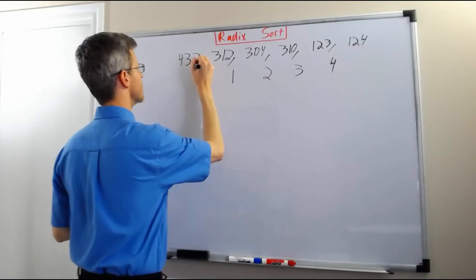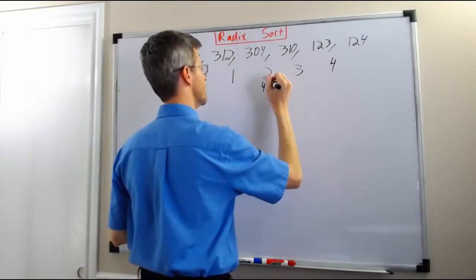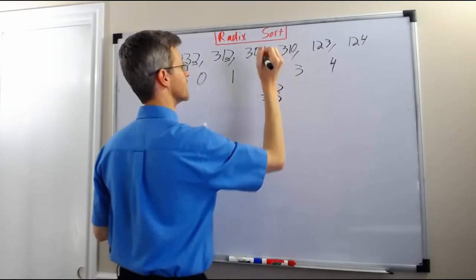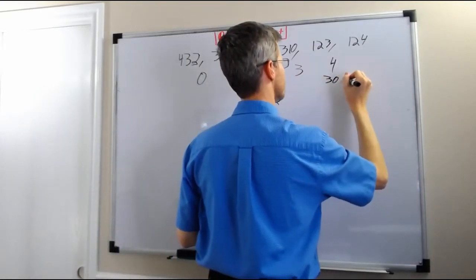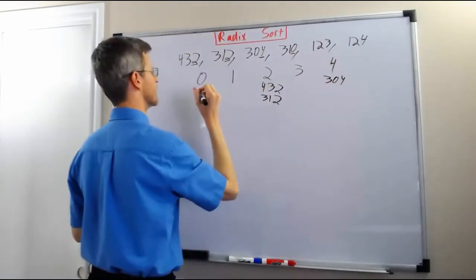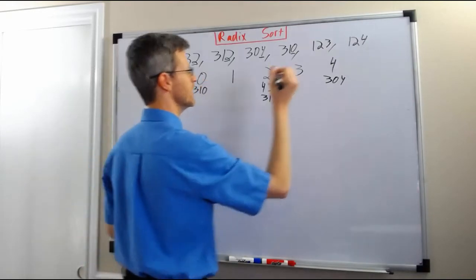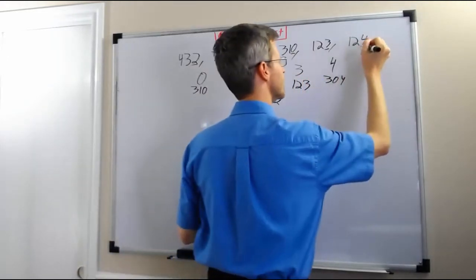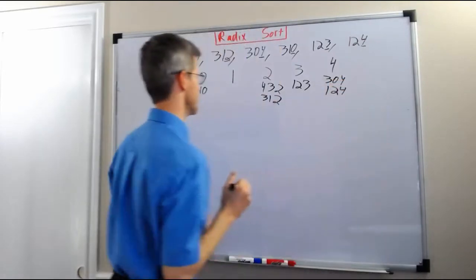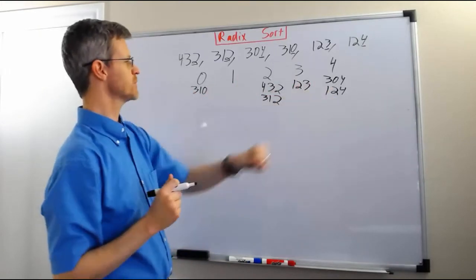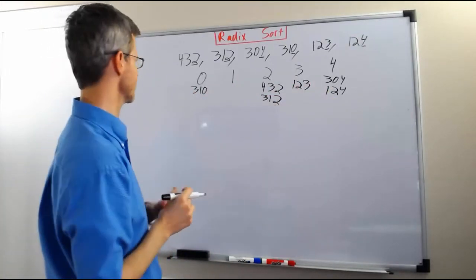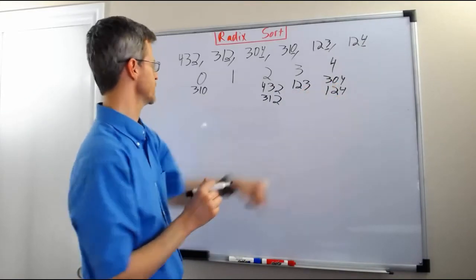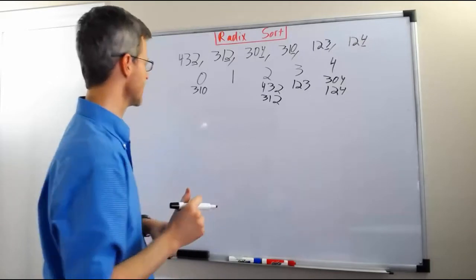432 has a least significant digit of 2, so we put it in the 2 bin. 312's least significant digit is also 2, so it goes in the 2 bin. 304's least significant digit is 4, so it goes in the 4 bin. 310 has a least significant digit of 0, so it goes in the 0 bin. 123 has a least significant digit of 3, so it goes in the 3 bin. And 124 has a last digit of 4, so it goes in the 4 bin. Reading left to right, the numbers are now sorted according to the least significant digit: 310, 432, 312, 123, 304, 124.